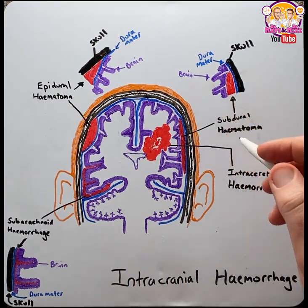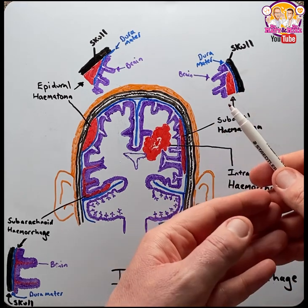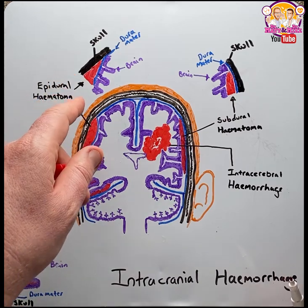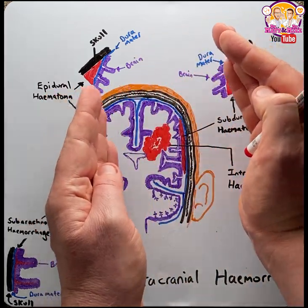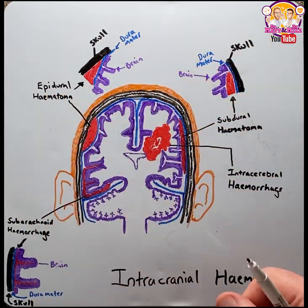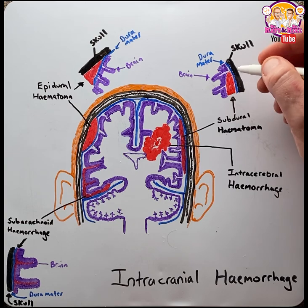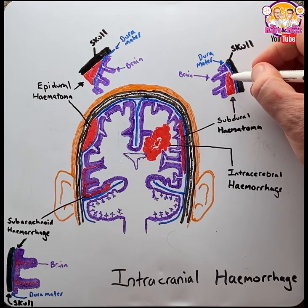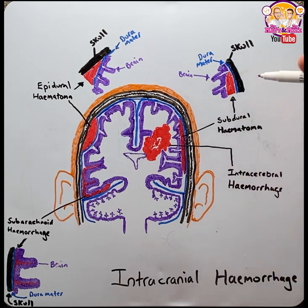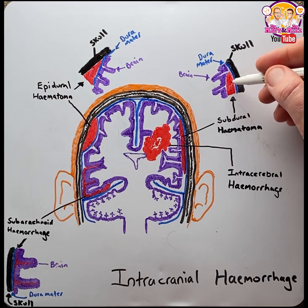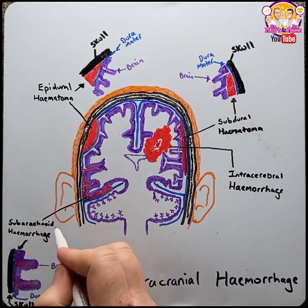Moving on to subdural hematomas. The primary cause of this type of bleed is also trauma, but usually from falls, unlike blunt trauma in epidural hematomas. The cause of the bleed is because the skull and the brain move apart from each other from the fall, which tears the bridging veins — venous blood vessels — leading to blood spilling below the dura, or between the dura and brain tissue. Most patients will present with reduced consciousness and pupil abnormalities, and because of the mass effect from the bleed within the skull, increased intracranial pressure will occur.